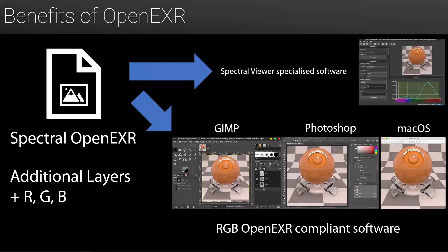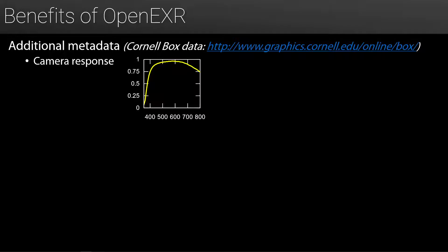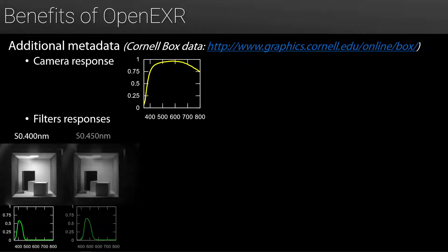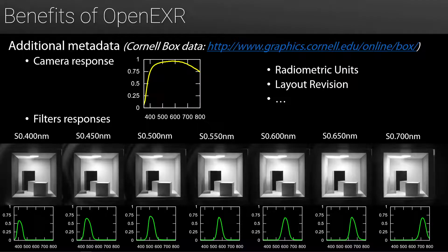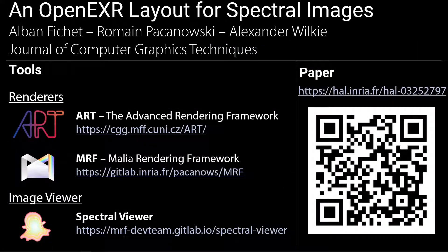Non-spectral aware software would just ignore the additional spectral information. Additionally, the OpenEXR format allows storing additional metadata, which is handy in our case. In our specifications, we propose ways to store additional information about the spectral camera response, each layer's spectral response, radiometric units, and layout revision for future improvements, to name a few. If you want more details, please read our published article in JCGT — the link is in the QR code. I also want to thank the OpenEXR developers for providing meaningful feedback during the development of the format. Thank you very much.